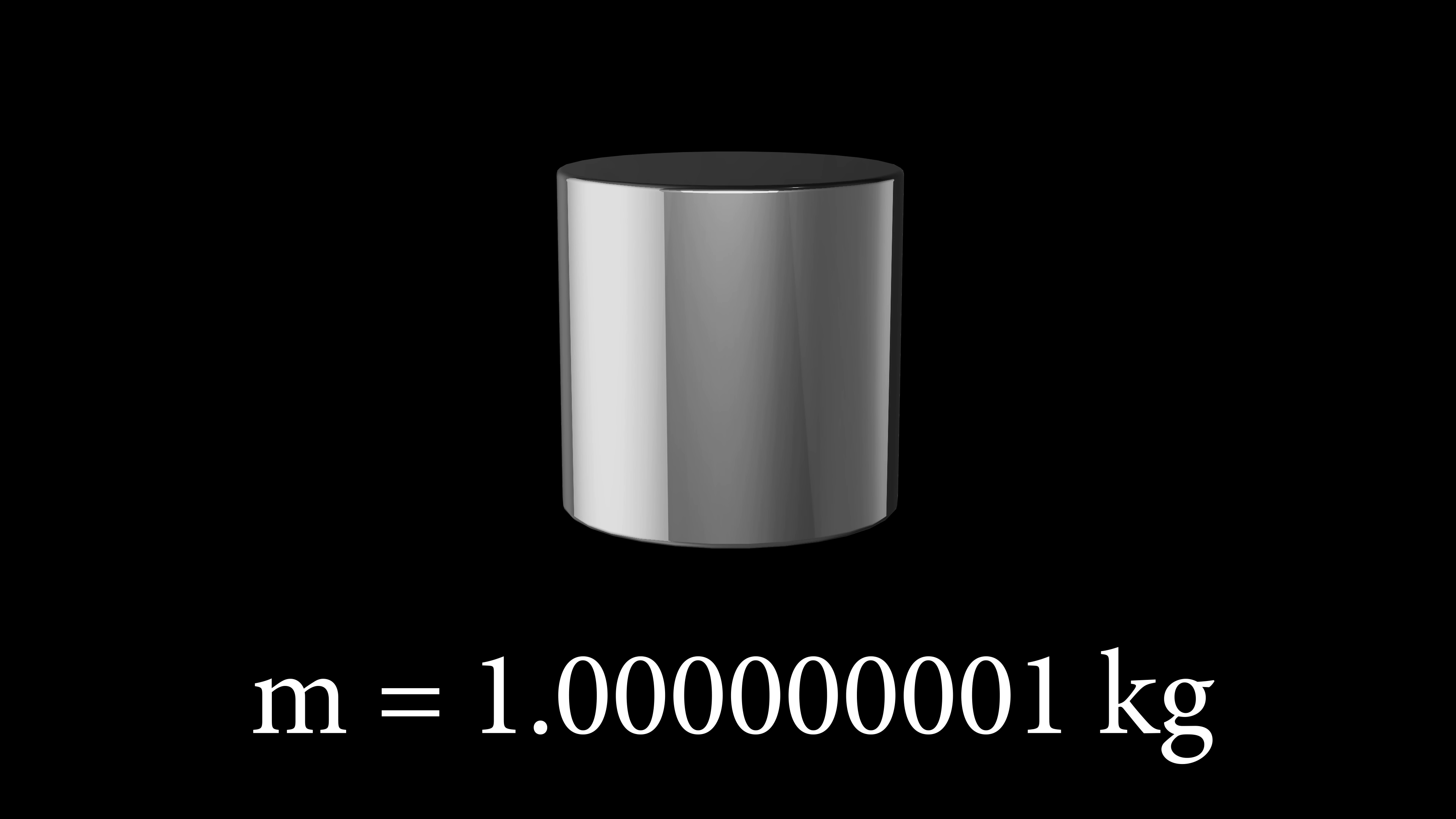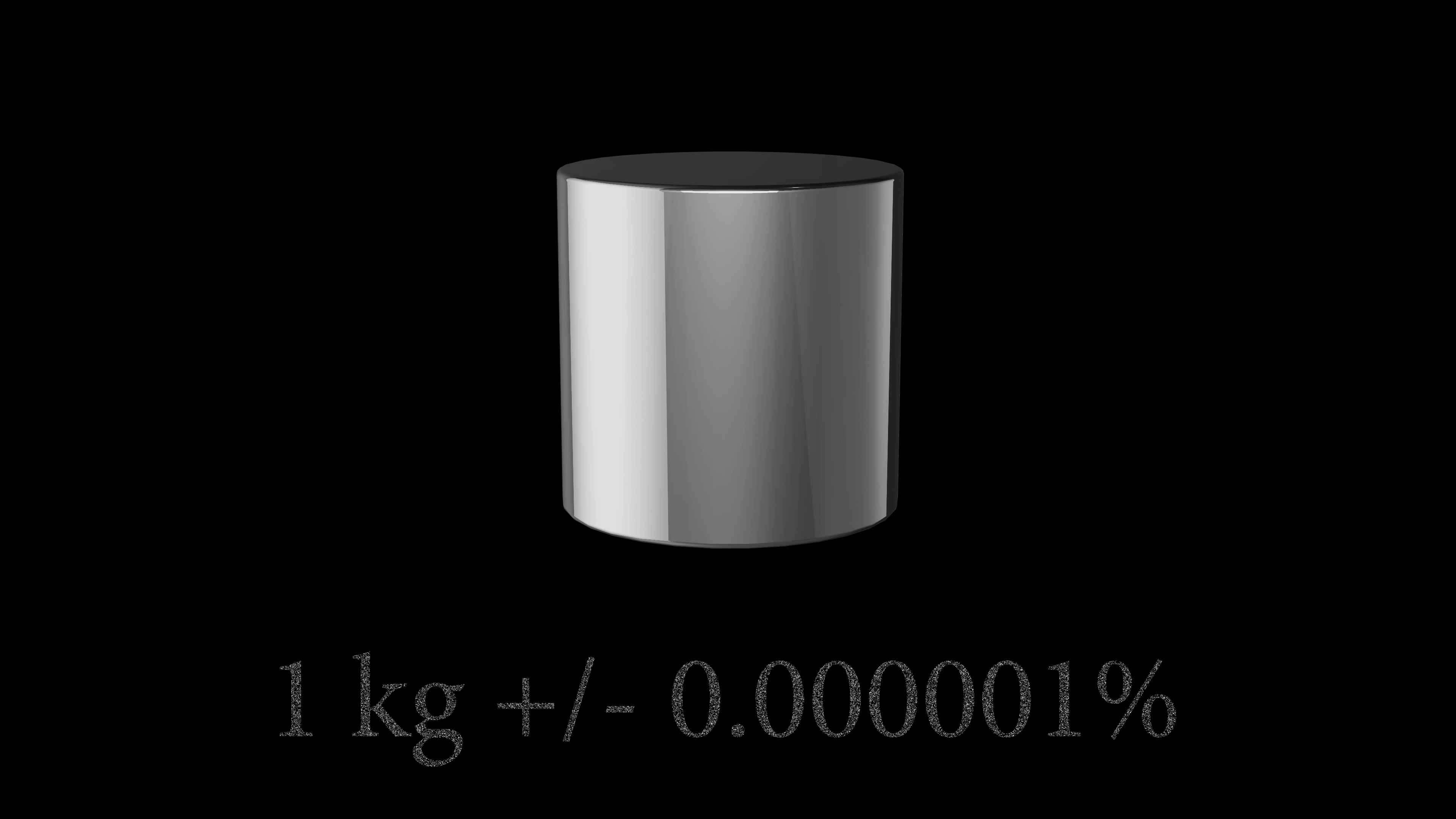The uncertainty in the mass of a standard kilogram is on the order of tens of micrograms. So that's tens of parts per billion, or about 0.00001 percent. It's pretty good.